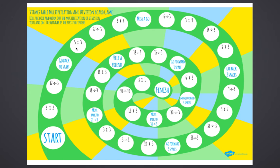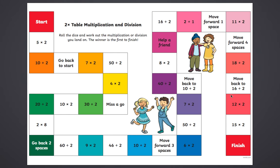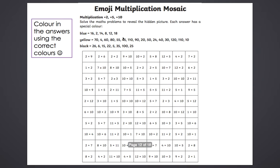Then there's a two times table game if you're still practising your two times table. And one last multiplication activity — a colour-in mosaic. Work out the answer to each question: two times nine is 18, so look up which colour to use for 18 — it's blue. Eleven times 5 is 55, so colour that square yellow. Once you've worked out all the answers and coloured them in, it should reveal an emoji. You might like to design one of these for somebody in your family to complete.